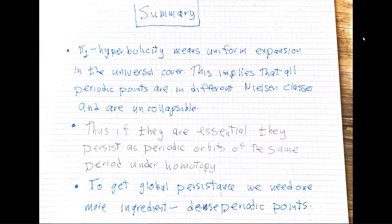One question is how much you can tell about dynamics from the action on homotopy and homology. The other related question is how do we understand when dynamics is persistent under homotopy. The strategy for the talk is to have a model map with well-understood dynamics. The starting point is pi-1 hyperbolicity.